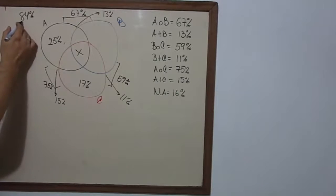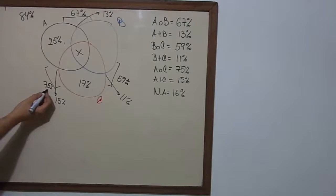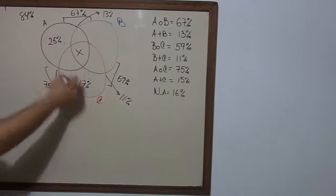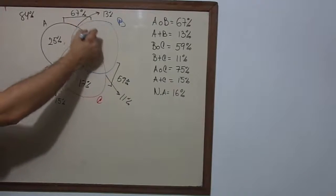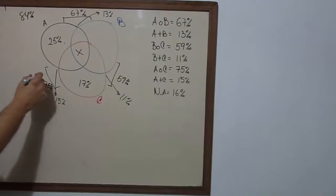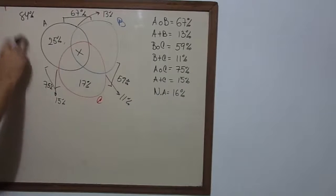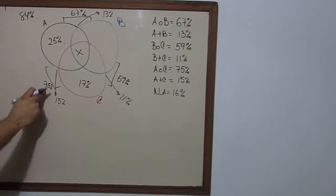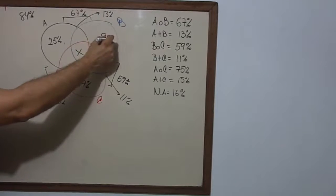Now, 84% minus 75%, which is the black circle and the red circle, are going to give us only this zone here in the blue circle. And that is 9%, right? Because 84% minus 75%, that's 9%.